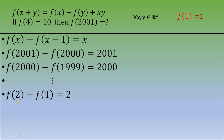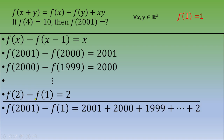We continue until f(2) − f(1) = 2. When we sum all these equations, the intermediate terms cancel by telescoping, and we end up with f(2001) − f(1) = 2001 + 2000 + 1999 + ... + 2.